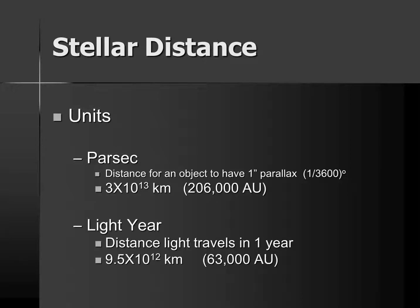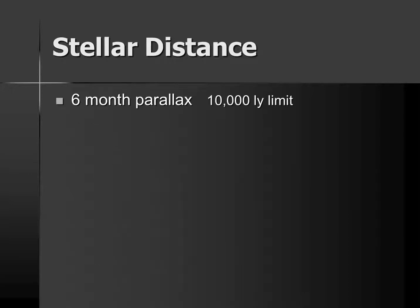Another more common unit for stellar distance is a light year. Light travels at 300,000 kilometers every second. If you kept on going at that speed for a year, you would have covered one light year, or 9.5 times 10 to the 12 kilometers, or 63,000 astronomical units. Six-month parallax may be used to determine the distance to stars up to a limit of about 10,000 light years.